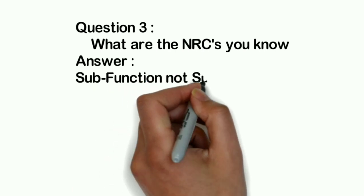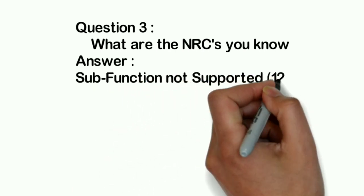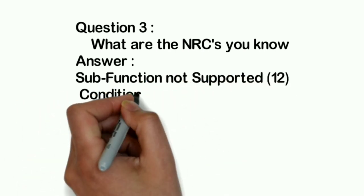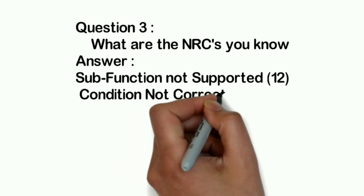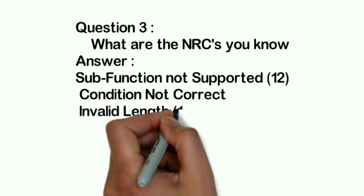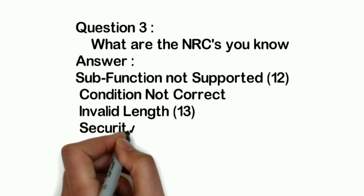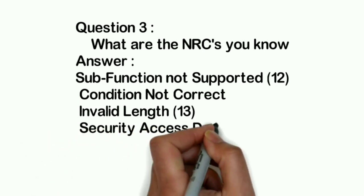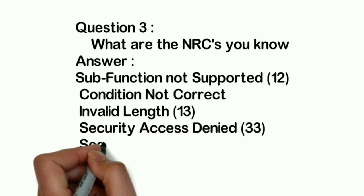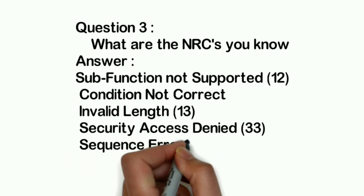Question three: What are the NRCs you know? Here you can just write the NRCs whatever you know. Even with conditions not correct, you can explain for at least 10 minutes - what are the conditions it will throw this NRC.